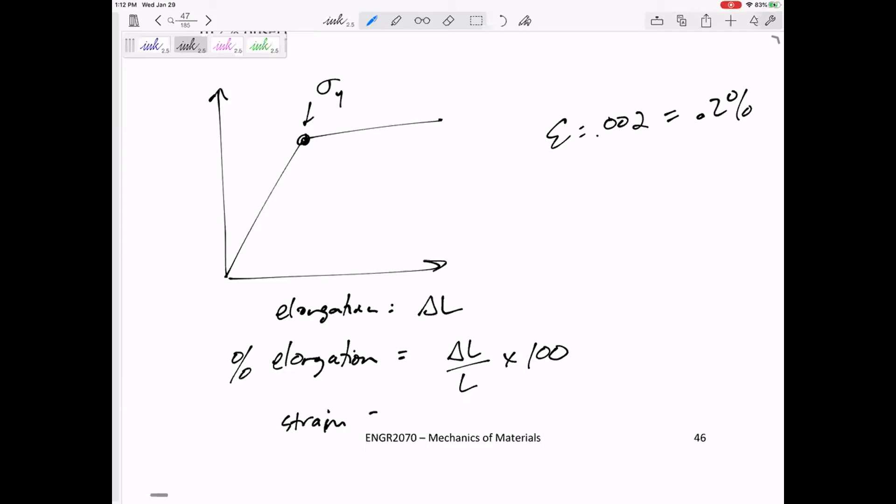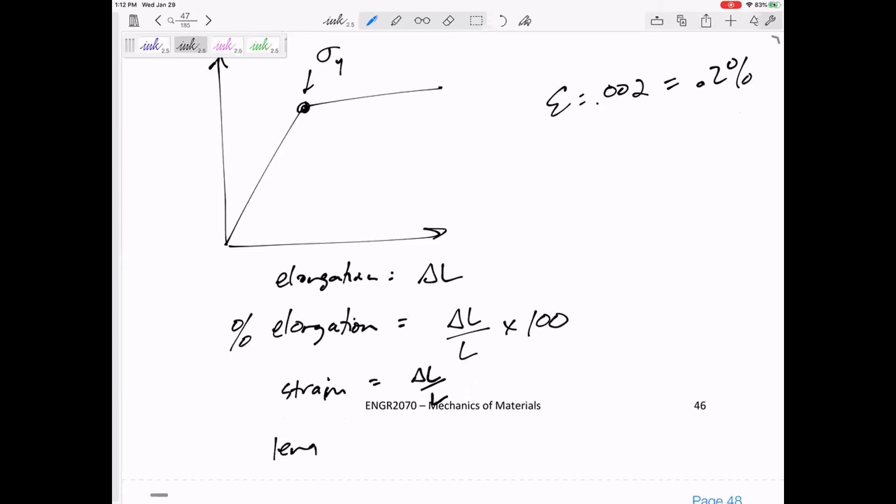So if I'm asking for the elongation, I'm just looking for the delta L, but the percent elongation is the strain times 100. If I just ask for the strain, delta L over L.